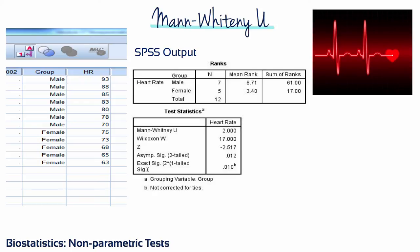The Mann-Whitney test approximates a standard normal distribution, and so the Z test is used to obtain a p-value. In this example, the mean rank for males is 8.71 and for females is 3.4. If there truly is no difference in heart rate between male and female patients, the probability of sampling 12 patients and getting the observed mean ranks is only 0.012. Since this p-value is below the alpha level of 0.05, we reject the null hypothesis of similar distributions and conclude males have higher heart rate than females.